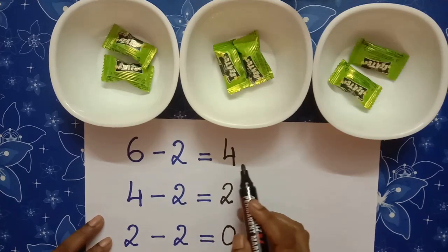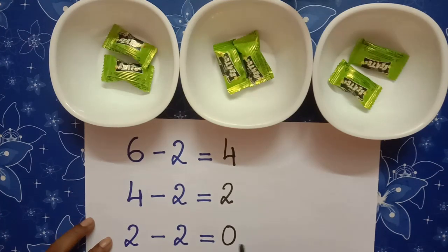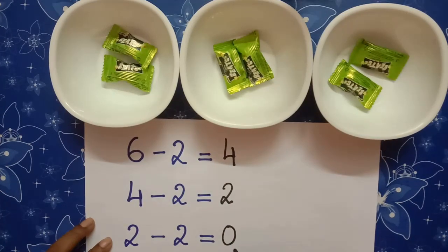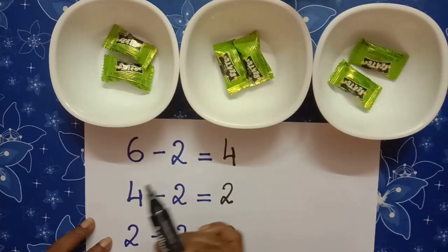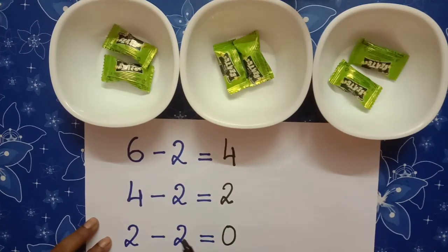So, 6 minus 2 is equal to 4. 4 minus 2 is equal to 2. And, 2 minus 2 is equal to 0. So, we see that 2 was subtracted 3 times from 6 to get 0. Now, 3 bowls have equal number of sweets. So, 6 divided by 3 is equal to 2.